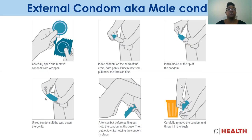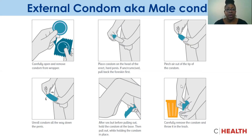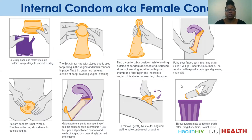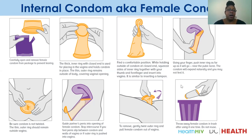We know that some folks do not have the luxury of negotiating condom use. In as much as we talk about using external condoms, there are many methods we can share with clients. The internal condom — we refer to it as internal because it's not always used for vaginas; it can also be used for anal sex. One great feature is that folks can insert it up to six hours in advance and it is still usable. It's a tool in folks' arsenal to protect themselves that we need to be aware of and educate our clients about.